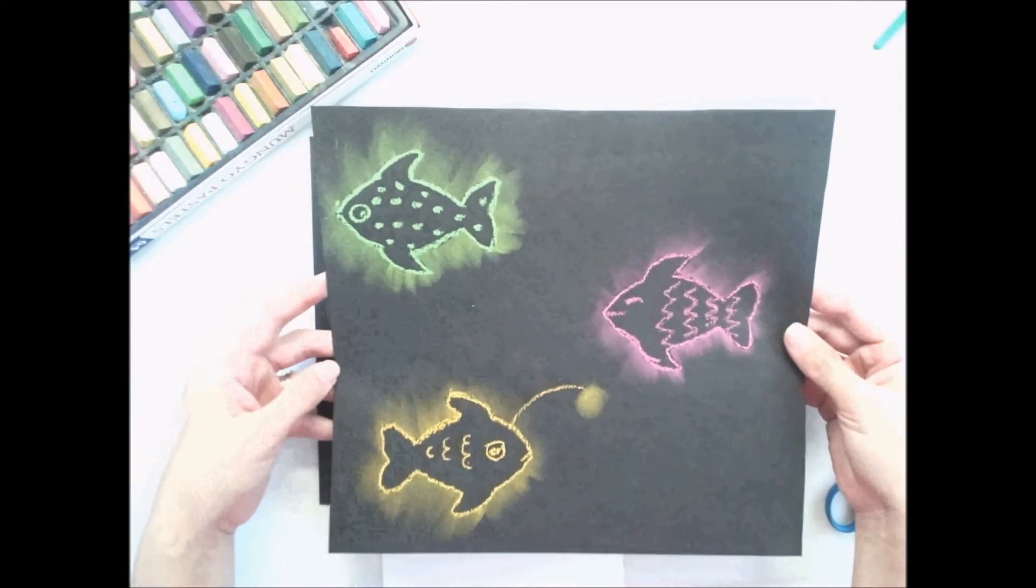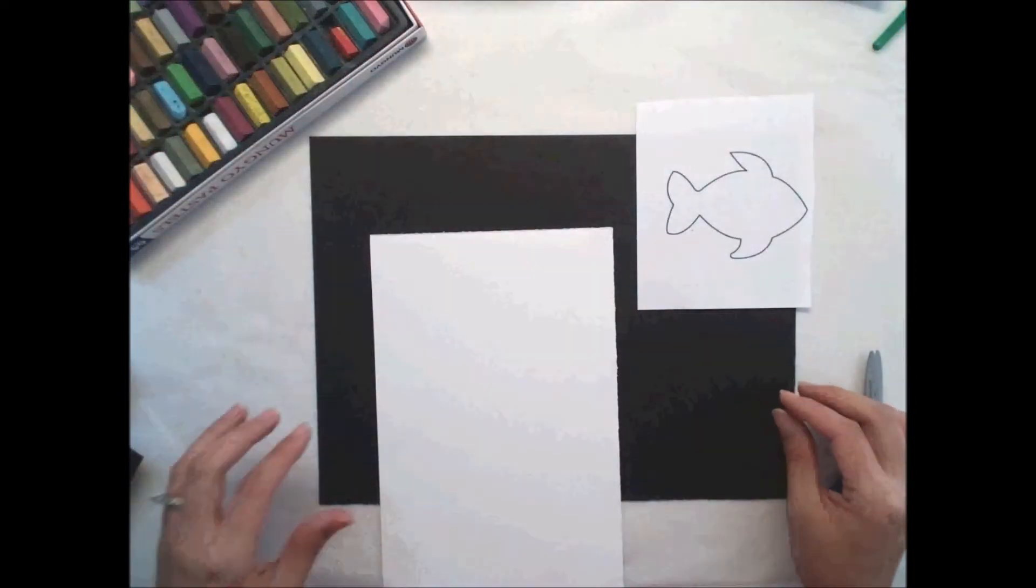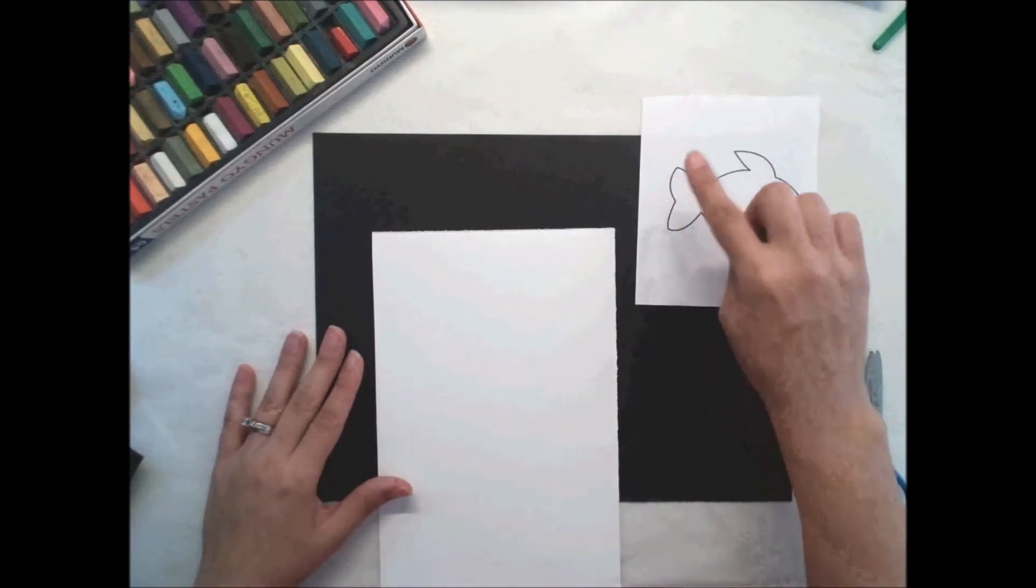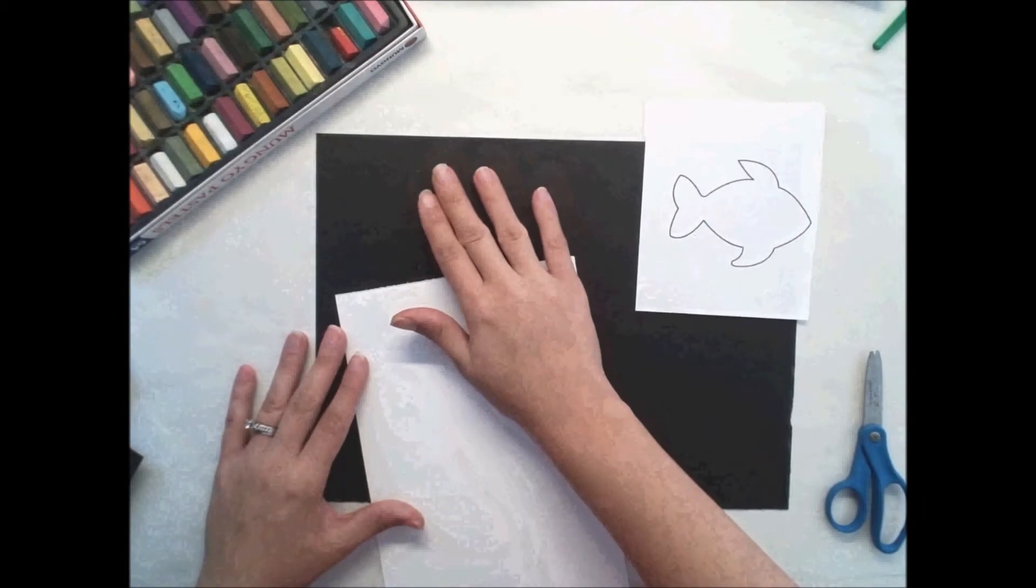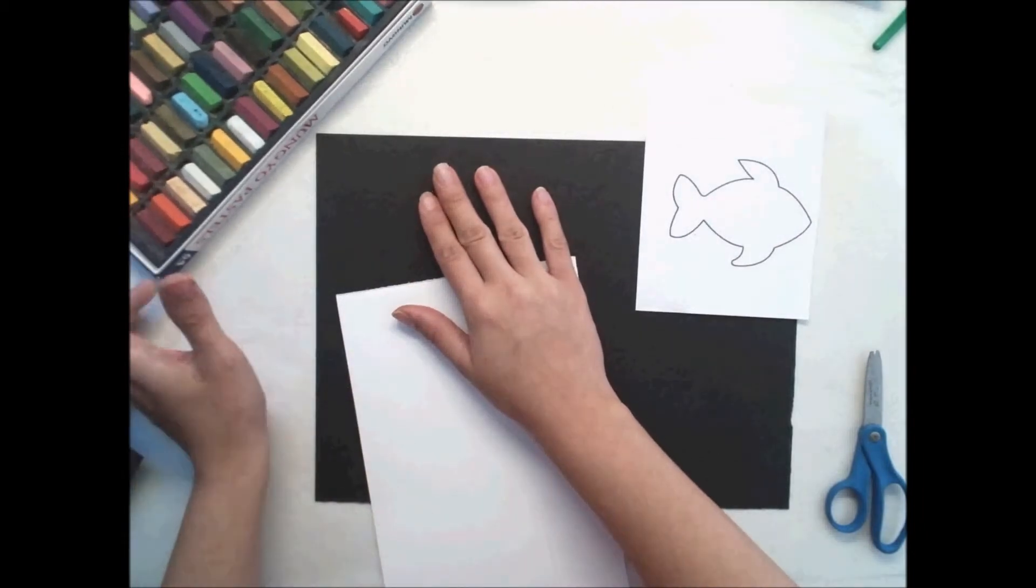For this project, you're going to need an outline of a fish. You can draw this yourself if you like. Scratch paper and black paper, as well as pastels. These are chalk pastels. And some scissors.